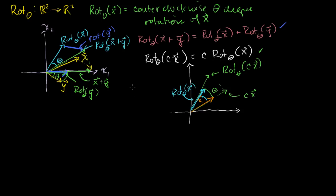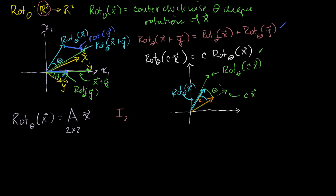Now let's construct a mathematical definition — a matrix that performs the transformation. My rotation transformation from R2 to R2 of some vector x can be defined as some 2 by 2 matrix times x, since it's a mapping from R2 to R2. To find matrix A, I start with the identity matrix in R2, which is [1, 0; 0, 1]. Its columns are the basis vectors for R2 — we call this column E1 and this column E2. To figure out A, we perform the transformation on each of these columns.